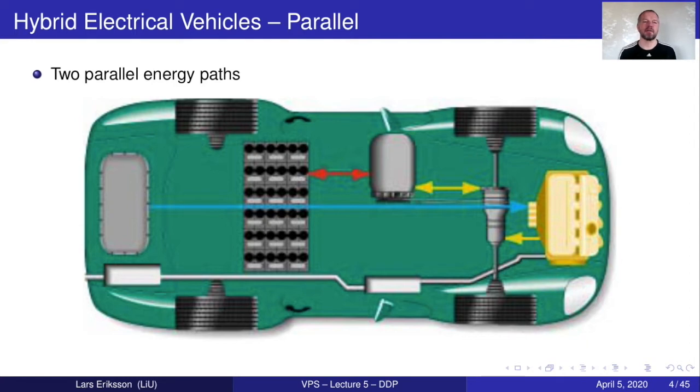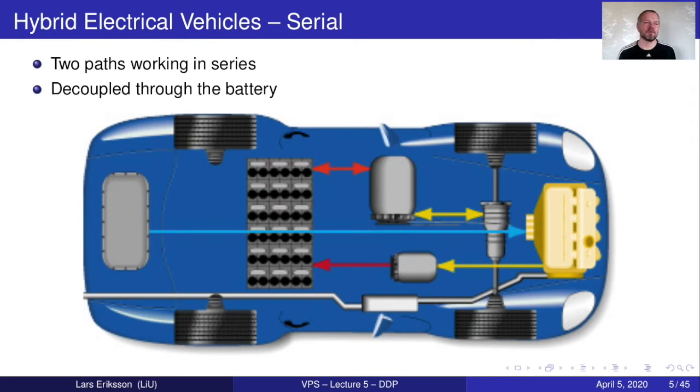We have the parallel hybrid vehicle that has two parallel paths one from the fuel tank going to the engine and out to the road and the other from the battery going out to the road. Then we talked about the series hybrid vehicle where we have two paths that are working in series. We have one chemical energy path that goes to the combustion engine and to the generator and then it's hooked up in series with the battery and the electric machine and the propulsion. In the hand-in tasks you will work with both the parallel and the serial hybrid.